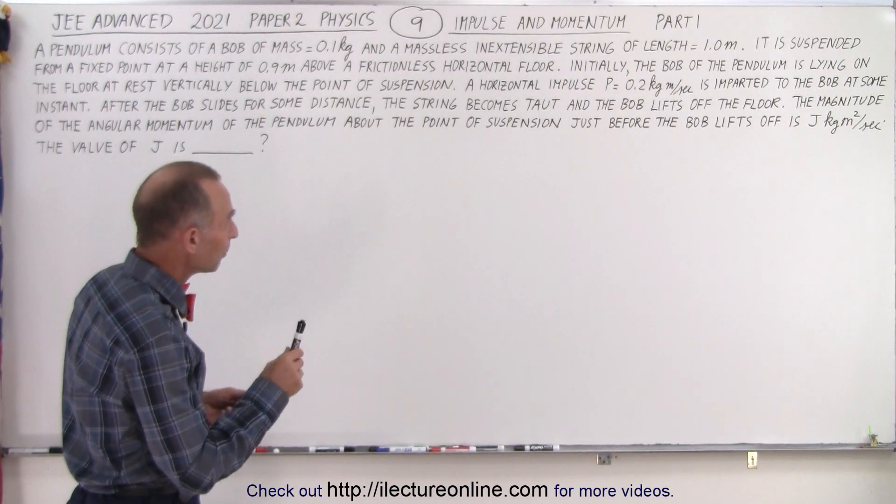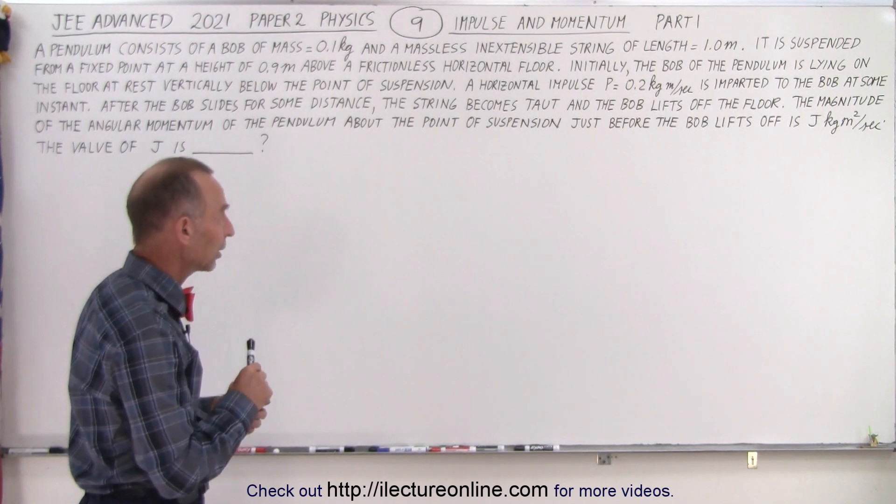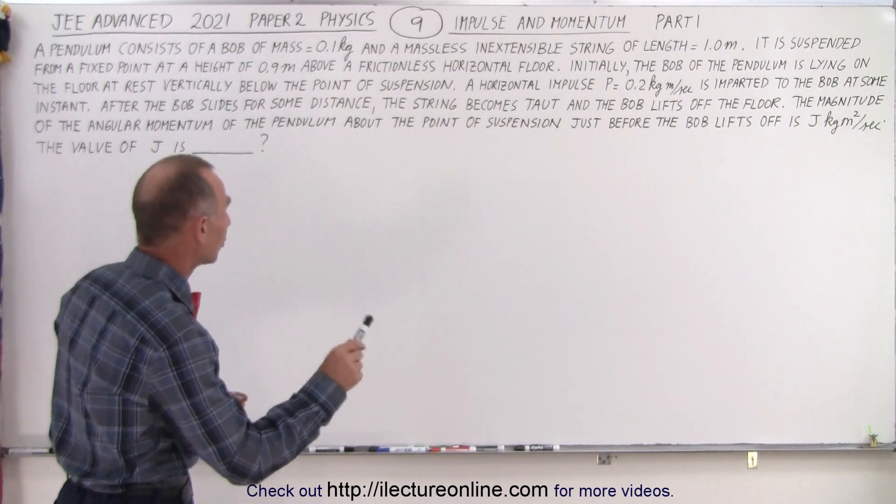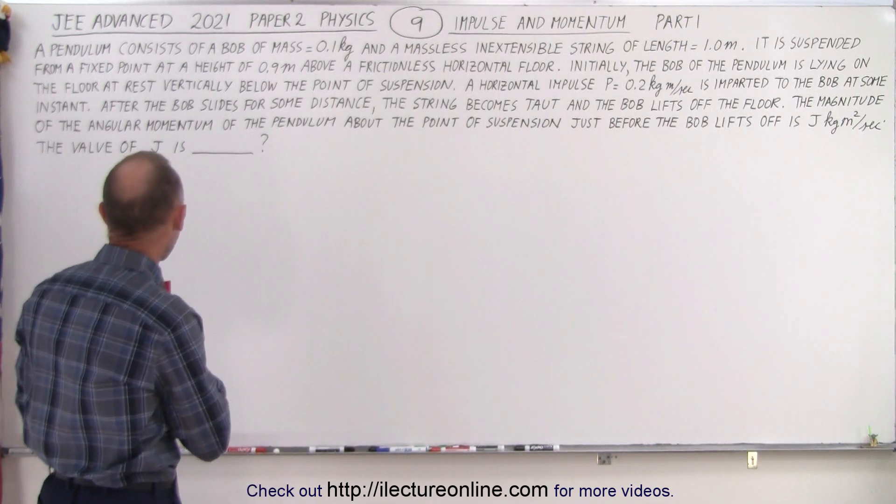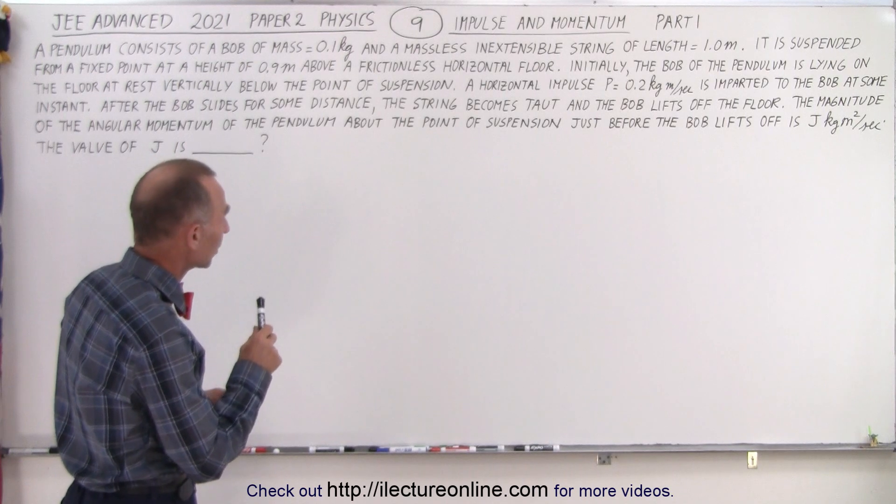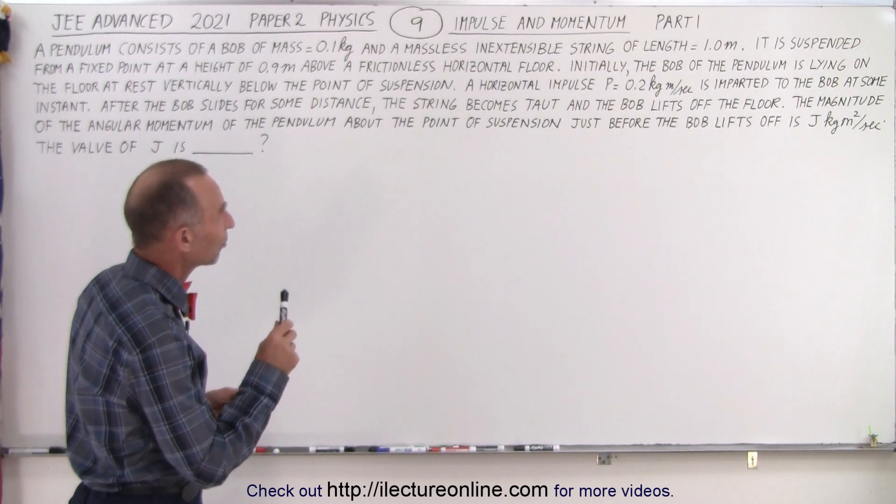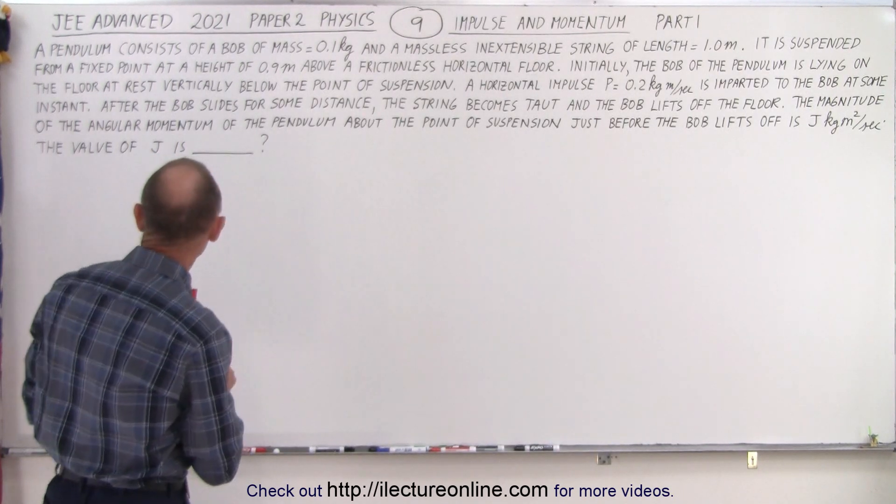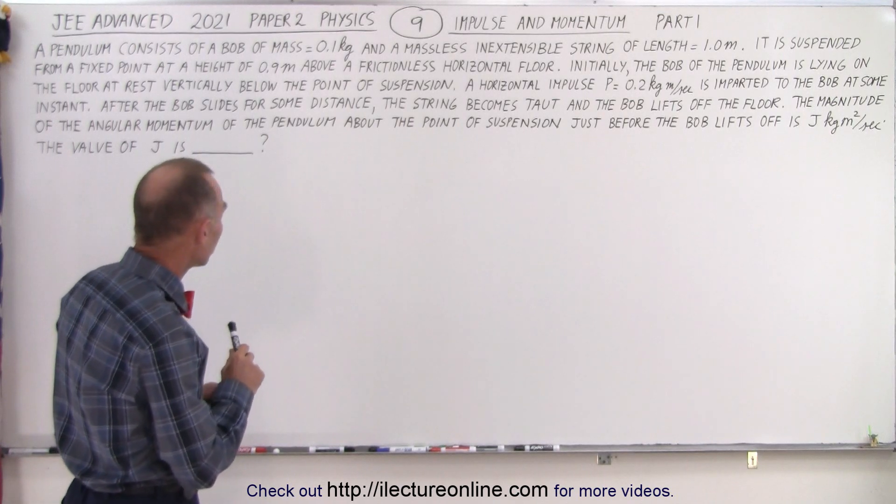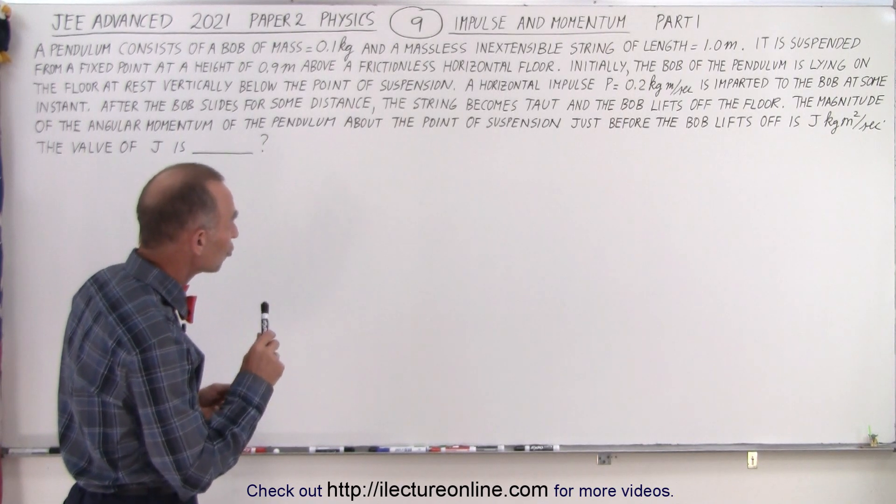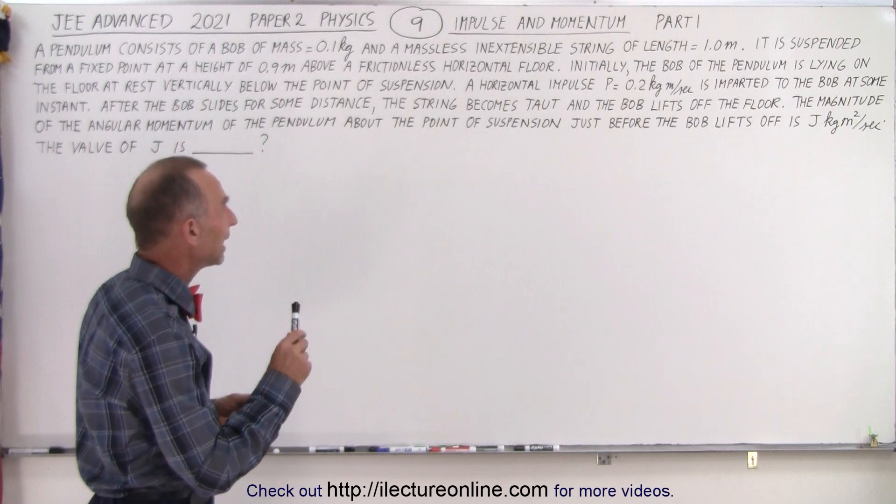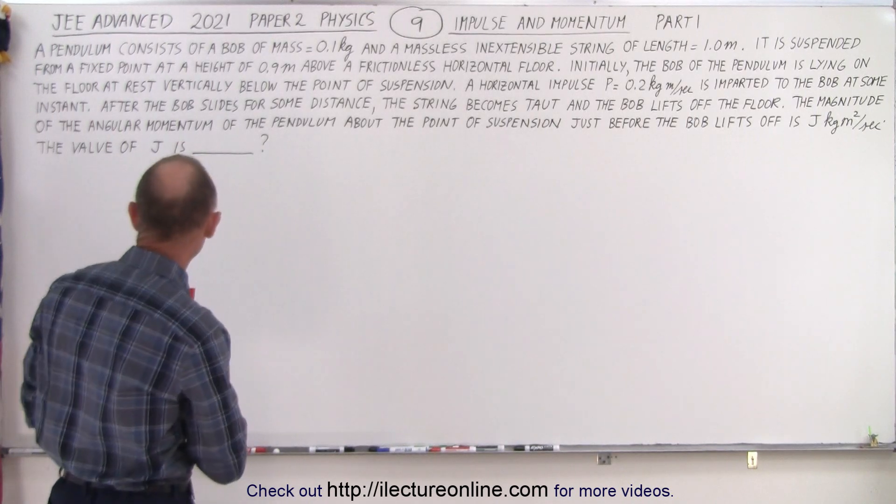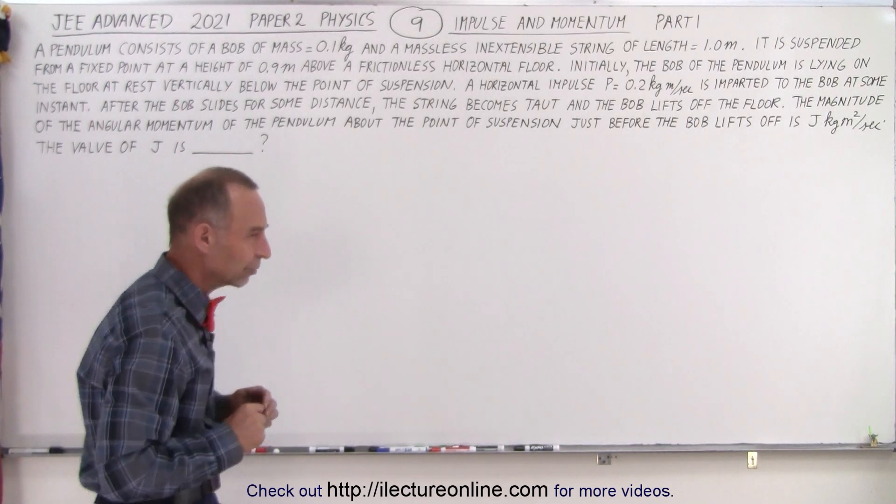A horizontal impulse P equals 0.2 kilogram meters per second is imparted to the bob at some instant. After the bob slides for some distance the string becomes taut and the bob lifts off the floor. The magnitude of the angular momentum of the pendulum about the point of suspension just before the bob lifts off is J kilogram meters squared per second and we're looking for the value of J.